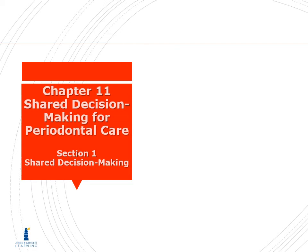Moving on to chapter 11, this is going to be on shared decision making for periodontal care. If you're in your book, this is going to be on page 201. Turn back to page 200, where it says part three — these are the risk factors for periodontal disease. Let's think about why they would put shared decision making in the same section as risk factors for periodontal disease.